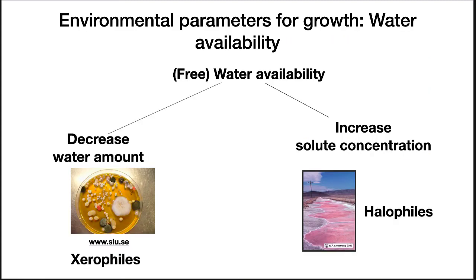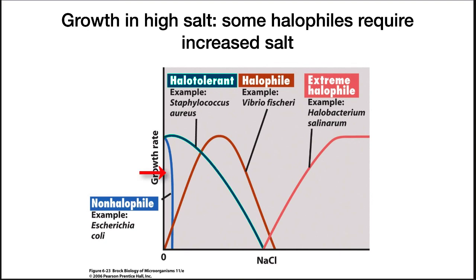A third environmental parameter that can affect the growth of microorganisms is water availability. The most important is free water — the amount of water that is not bound to solids. There are two ways that free water can decrease in a solution. The amount of water can decrease by plain old evaporation, and organisms that can survive under these conditions are called xerophiles. A second way free water can decrease is by increasing the solute concentration. Solids bind up water and make it unavailable for biological reactions. Microorganisms that can grow at higher salt concentrations are called halophiles. A non-halophile such as E. coli will very quickly stop growing as salt concentration increases.